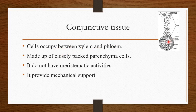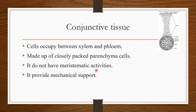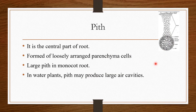Next is the conjunctive tissue. It is normal parenchyma tissue occupying the space between xylem and phloem, made up of closely packed parenchyma cells. In monocot root, the conjunctive tissue does not have meristematic activities, but in dicot roots it may possess meristematic activities. In monocot root, the conjunctive tissue provides mechanical support.